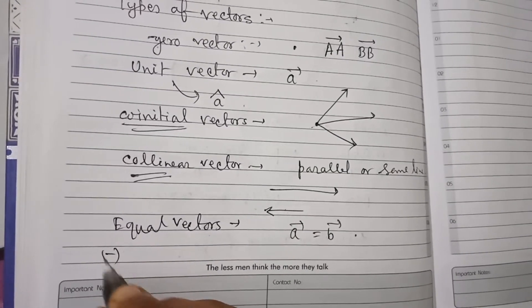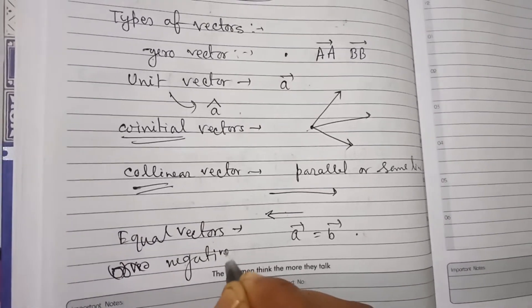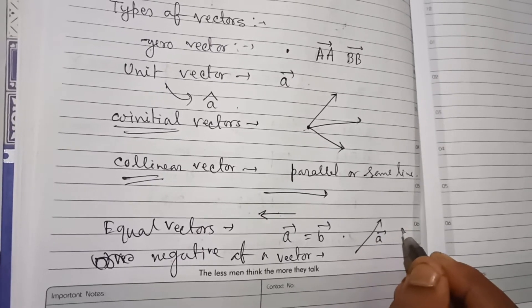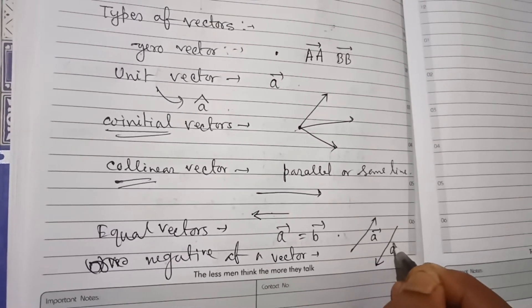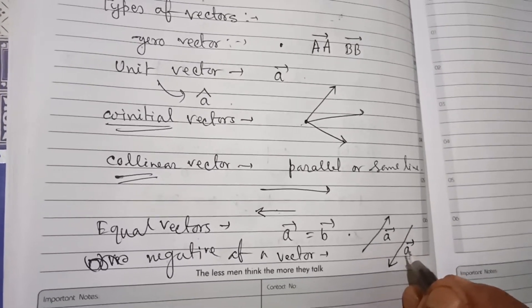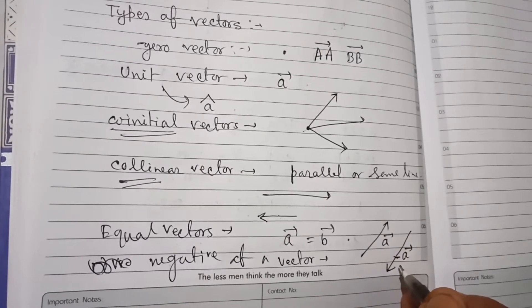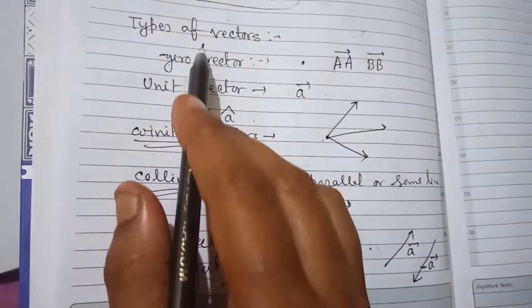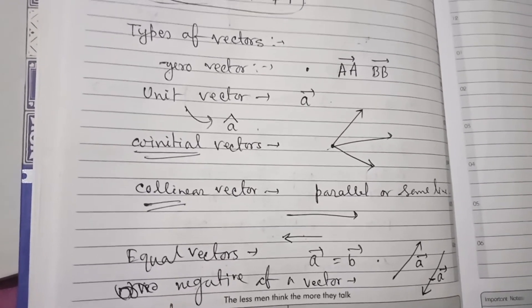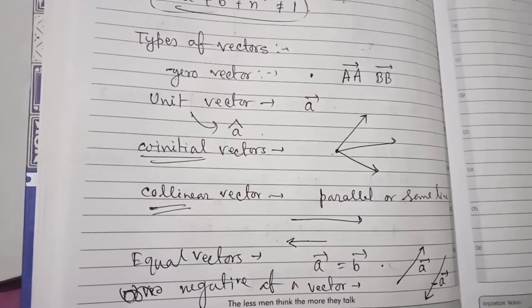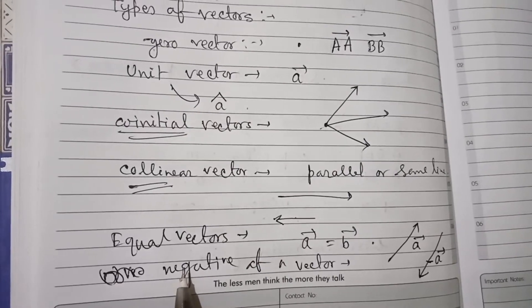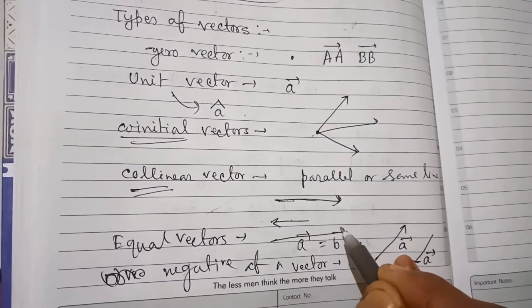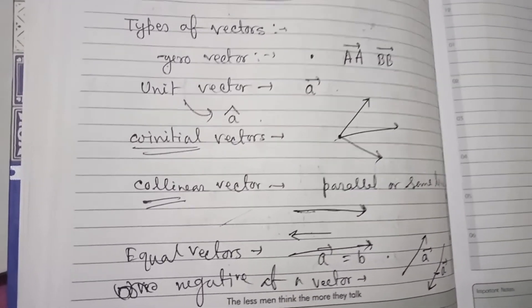The next type is negative of a vector. Suppose vector a points in one direction — then the vector in exactly the opposite direction with the same magnitude is called minus a (negative of a). So one side is vector a and the other side is −a, but their magnitudes are equal. All these vectors we have discussed will be treated as free vectors. Free vector means we can shift this vector without changing its direction and magnitude to any parallel position — that is called a free vector.